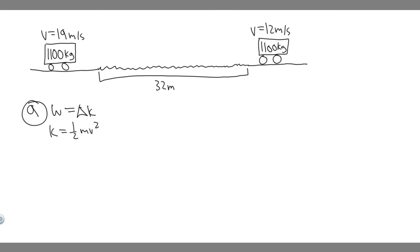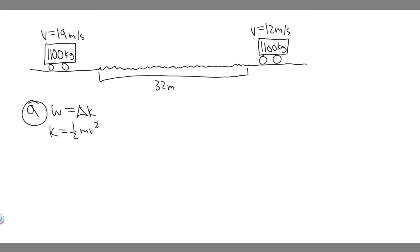Think about this: the kinetic energy equals one half mv squared. The mass is 1,100 kg and stays the same — the only thing that changes is the velocity, which goes from 19 to 12. Since 19 is greater than 12, the kinetic energy at the beginning is greater than at the end.